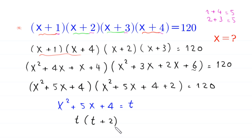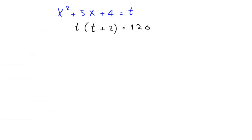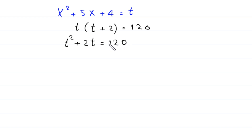Expanding t(t+2) gives t²+2t = 120. Moving 120 to the left-hand side, this becomes t²+2t−120 = 0.